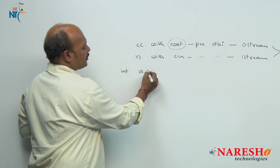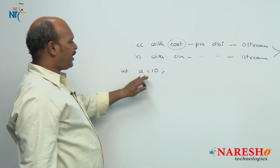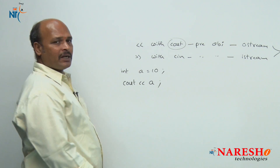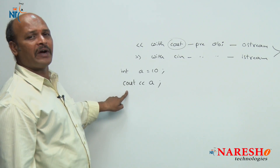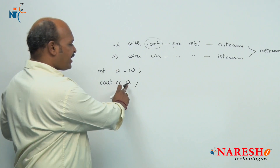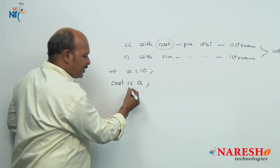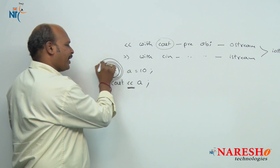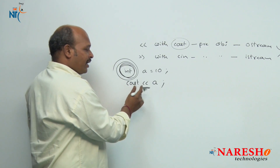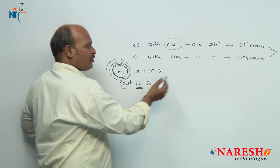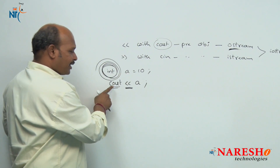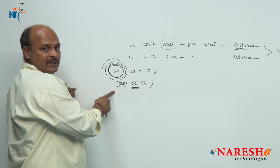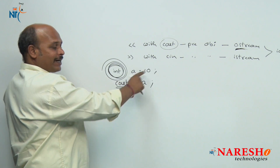For example, consider int A = 10. If I want to print A using cout, the statement is: cout << A. Here, cout is a predefined object of ostream class and A is an integer variable. That means the insertion operator << is working on a predefined data type. Whenever we overload <<, the left-side object should be of a class and the right side should be a variable.